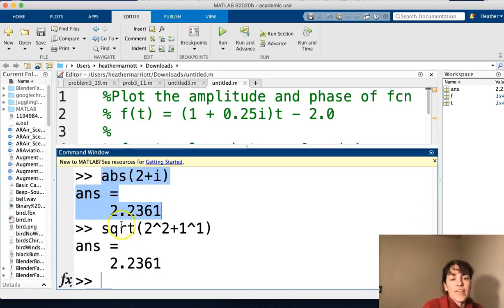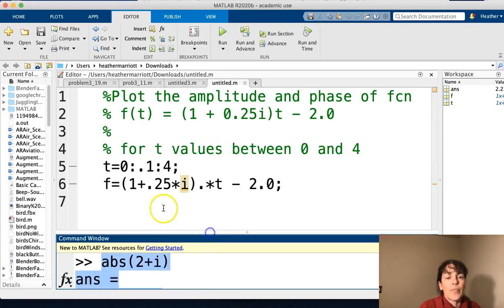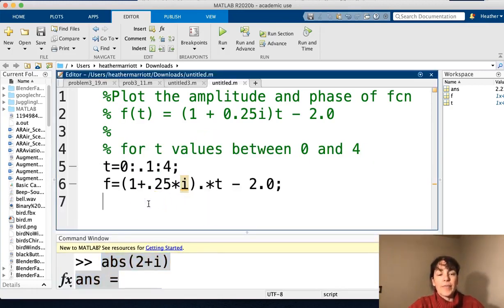So that absolute value function is going to do the same thing that we just did right here. And we're going to do that for every single point in our function to get the amplitude of each of those f values. So I'm going to say amp for amplitude is equal to the absolute value of the function. So that's the first thing we're going to graph.